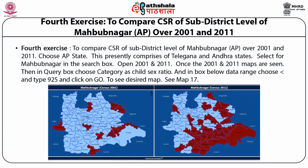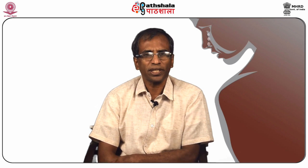The fourth exercise looks at Mahbubnagar, a district of Andhra Pradesh — presently undivided Andhra, covering Telangana and Andhra. Choose Mahbubnagar, display 2001 and 2011 census maps simultaneously, then in the query box choose category child sex ratio with a data range of less than 925. We have thus mapped child sex ratios at different levels today: All India level, state level, district level, and even at the sub-district level, and looked at trends over the 2001 and 2011 census.